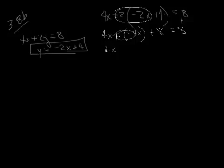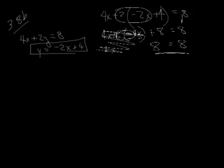4x plus negative 4x is 0x's. So those, my x's go away, and I get 8 equals 8. Well, that's a true statement, but I don't know what my x is, and I don't know what my y is. But, what do we have? We have a true statement there.